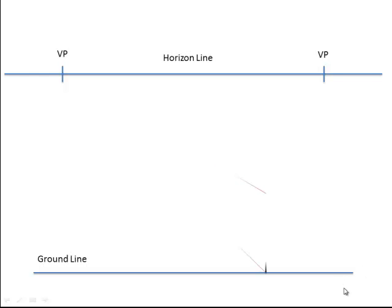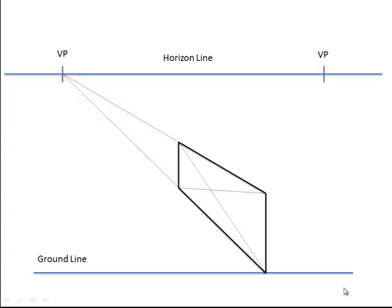First of all, we're going to construct a simple rectangle and vanish it back to a vanishing point. Then we're going to cross the two diagonals. This gives us the center of our rectangle.